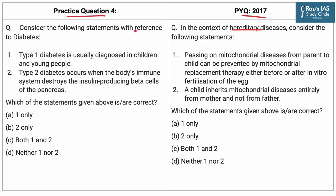Consider the following statements with reference to diabetes. Statement 1: Type 1 diabetes is usually diagnosed in children and young people. This statement is correct. Diabetes is a lifelong condition that causes a person's blood glucose level to become high. The hormone insulin, produced by the pancreas, controls the amount of glucose in the blood. Type 1 diabetes is usually diagnosed in children and young people, thus it is also known as juvenile diabetes. It is characterized by deficient insulin production and requires daily administration of insulin.